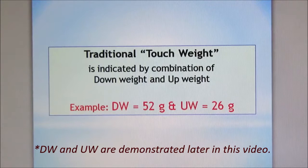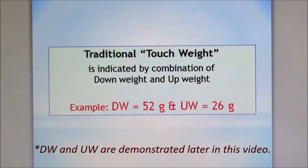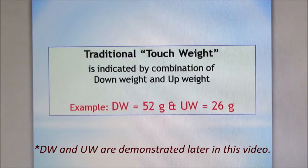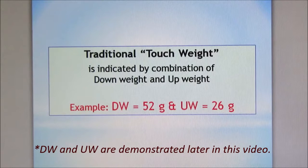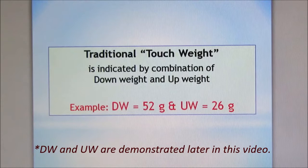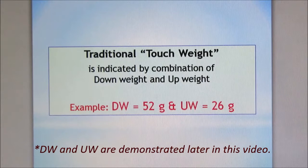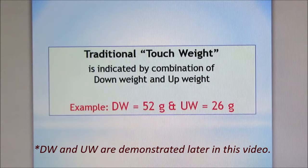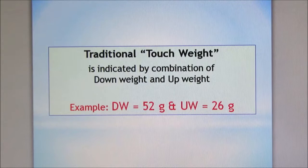In this case, down weight is the weight when you put a certain weight in front of the key. The key just slowly goes down and the hammer goes up very slowly but stops when the jack touches the let-off button. Up weight is the weight when you put a certain weight in front of the key, then push down to let-off position, then release the weight or the hand. Then the key is going up very slowly and the hammer goes down very slowly to rest position or slightly above rest position.